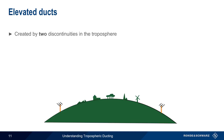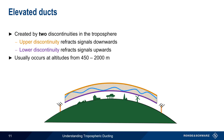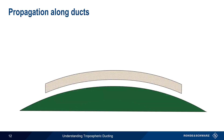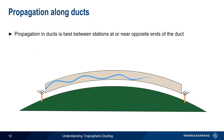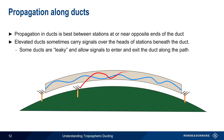Elevated ducts, on the other hand, are created by two discontinuities in the troposphere. The upper discontinuity refracts signals downwards, and the lower discontinuity refracts signals upwards, so signals are propagated between these two discontinuities. Elevated ducts typically form at altitudes of a few hundred meters to a few kilometers. Since this is above many surface features, elevated ducts are normally able to propagate signals for longer distances over land compared to a surface duct. Regardless of the type of duct, the best propagation conditions are observed between stations at or near opposite ends of the duct. Some ducts are, however, leaky and will allow signals to enter or exit the duct at various points along the path.